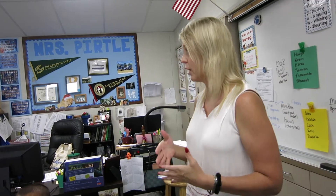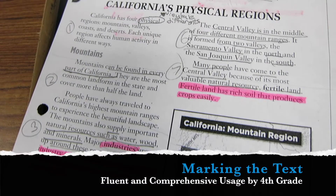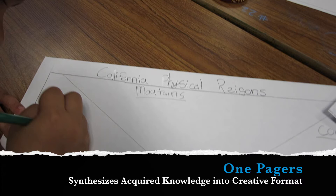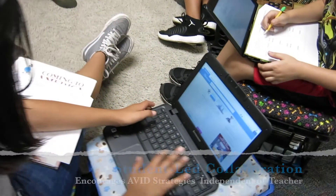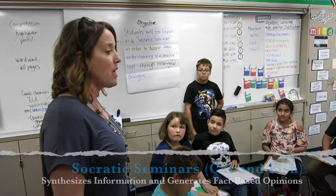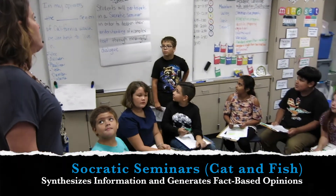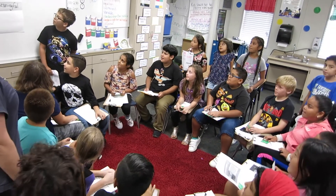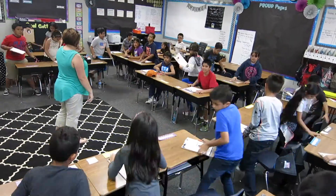When we have people walk in and they look at these pictures, they're going to say, oh, this class is learning about California's physical regions. We read articles on the California regions and we are going to discuss those articles today. Please read with me the objective. Students will participate in a Socratic seminar. I agree with Damian because in paragraph 9 it says millions of tourists flock to California's beautiful coast and beaches every year.